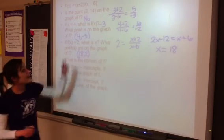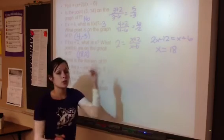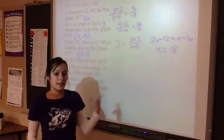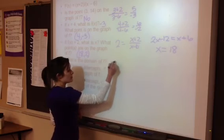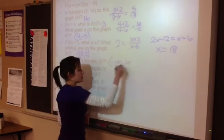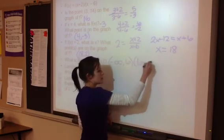What is the domain? This one is a fraction, so we have to look at the denominator. 6 makes the denominator zero. So negative infinity to 6 with parentheses, and 6 to infinity.